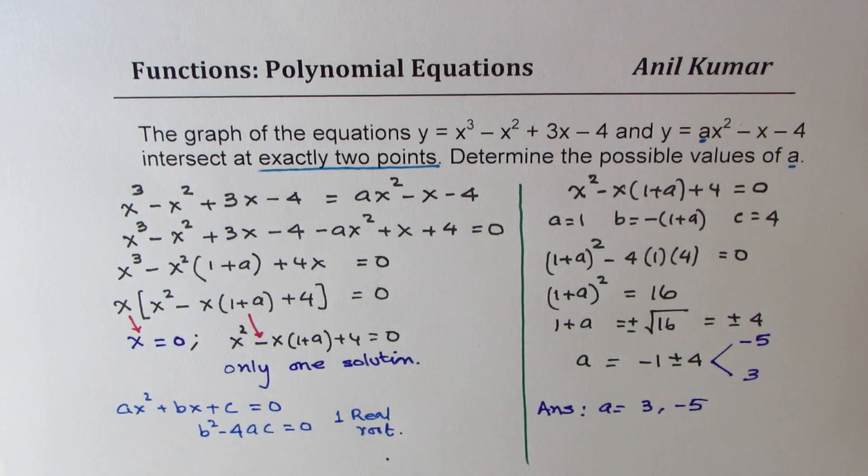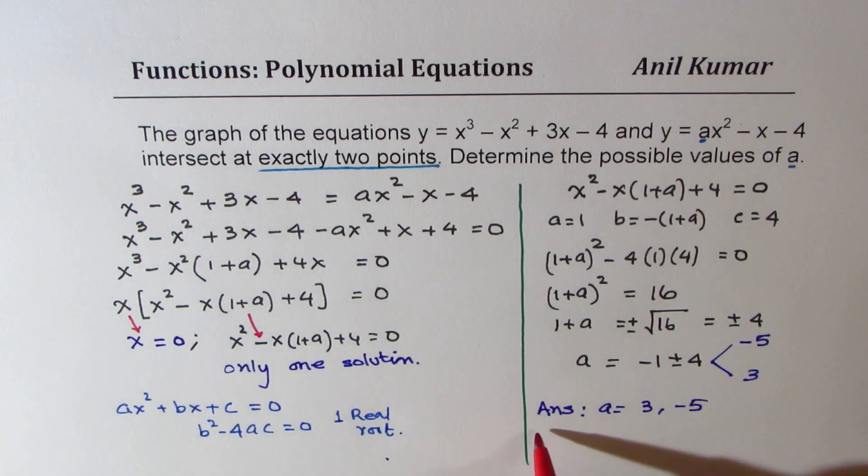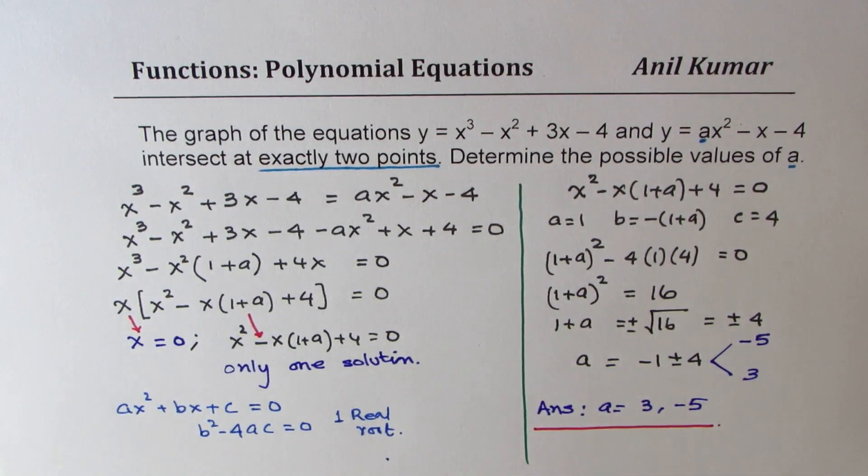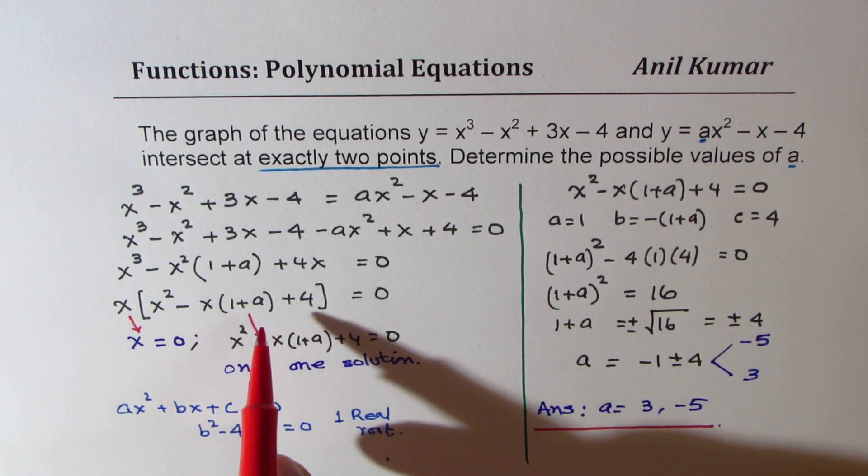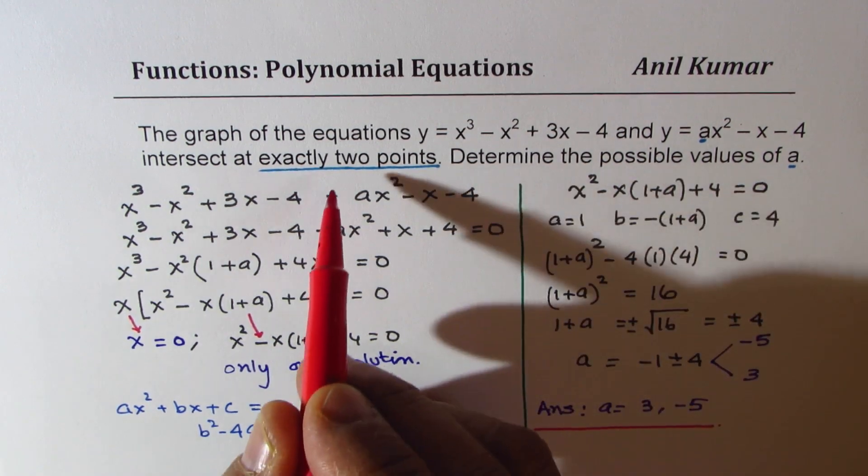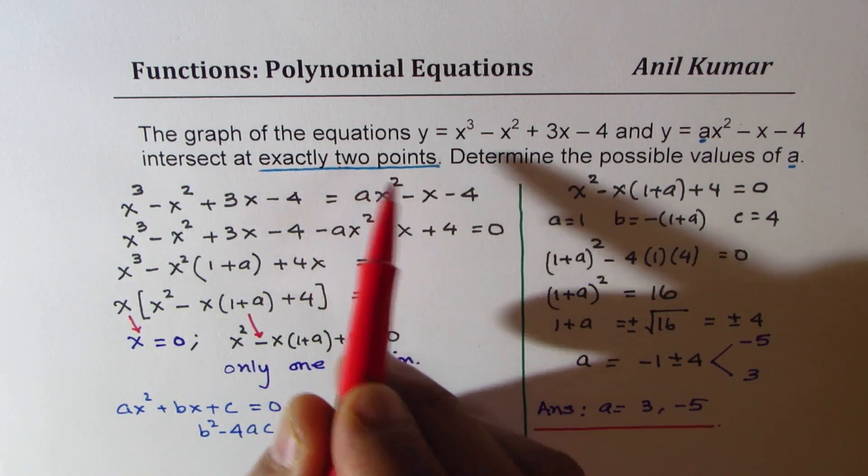Is that clear? So that is how we can actually solve this equation. So the key here is to understand that this part of the equation, the second factor, should have only one solution to give you exactly two points where these two graphs intersect.